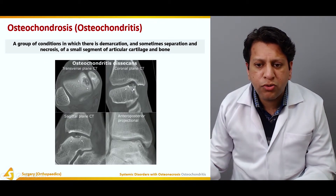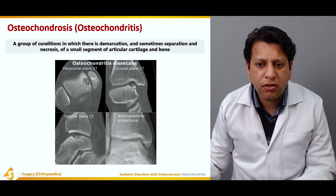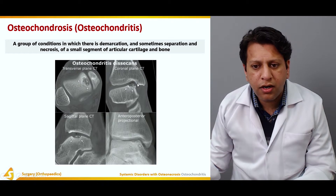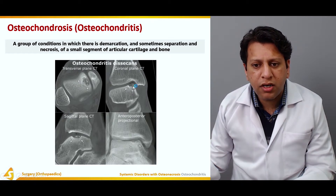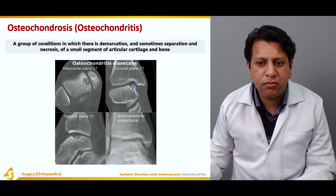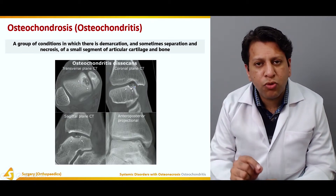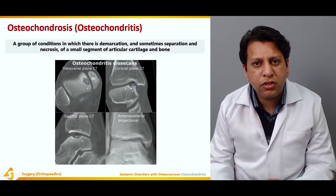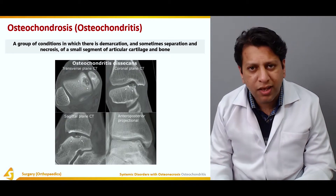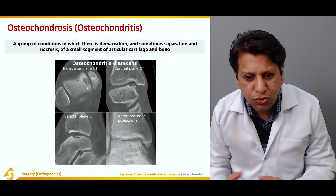This is also showing the ankle joint. The talus has a small piece which has actually necrosed and the cartilage has collapsed, leading to this kind of appearance in which a very small piece is actually separated from near the joint.